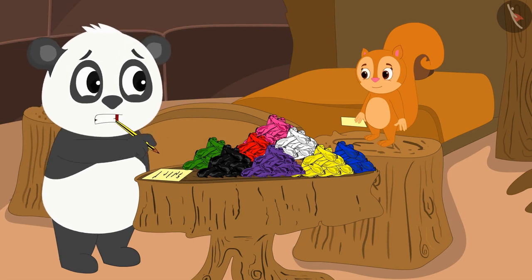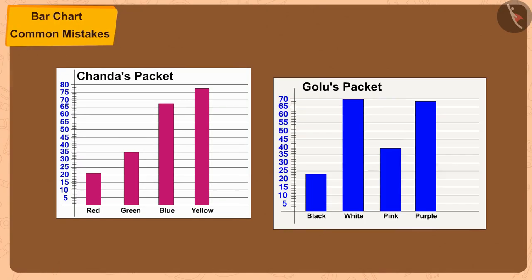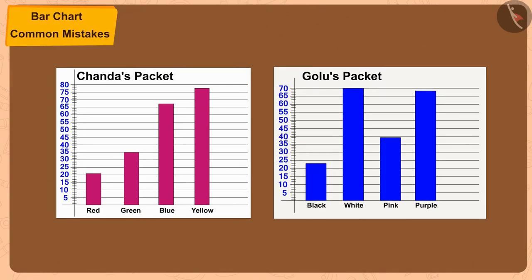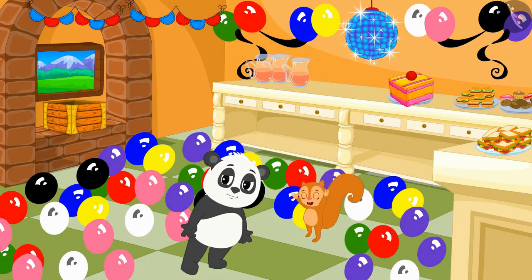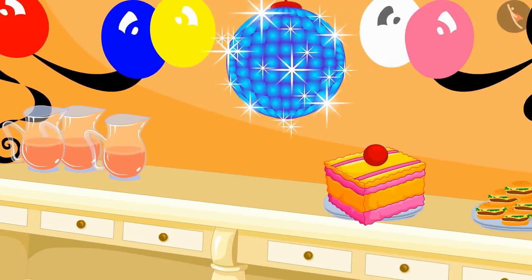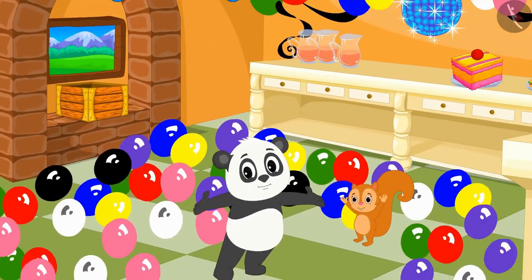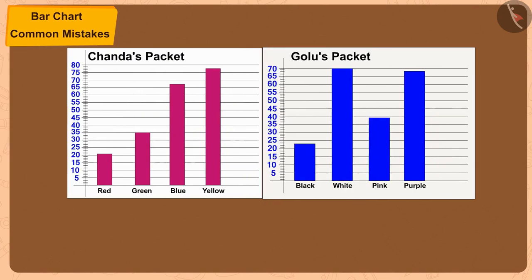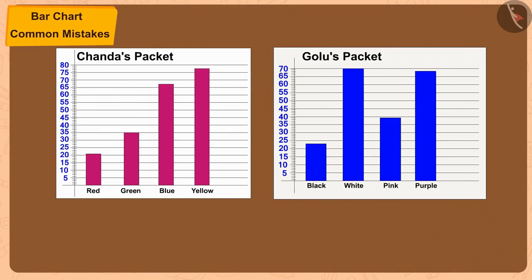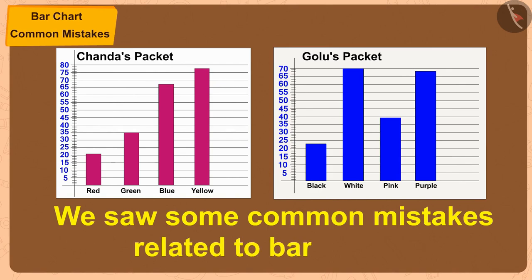This is a bar chart. Chanda and Gulu made their own bar charts and, with the help of that information, decorated Bhola's house with beautiful balloon patterns for his birthday. Children, in this video, we saw some common mistakes related to bar charts.